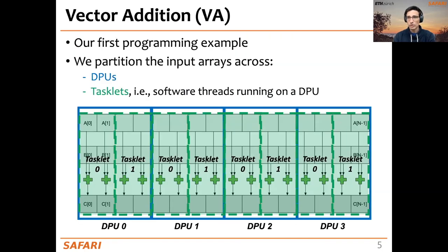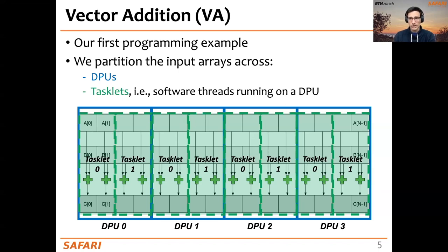We also talked about some programming examples, and the first one we covered was vector addition. In vector addition, we equally partition the input and output arrays and distribute them over the available DPUs in the system. Inside each DPU, we also distribute the workload among the available software threads or tasklets.